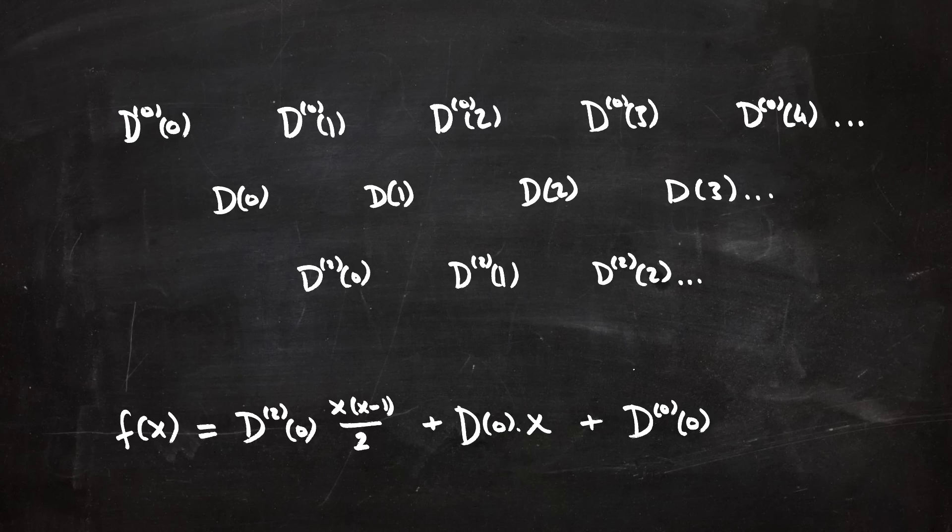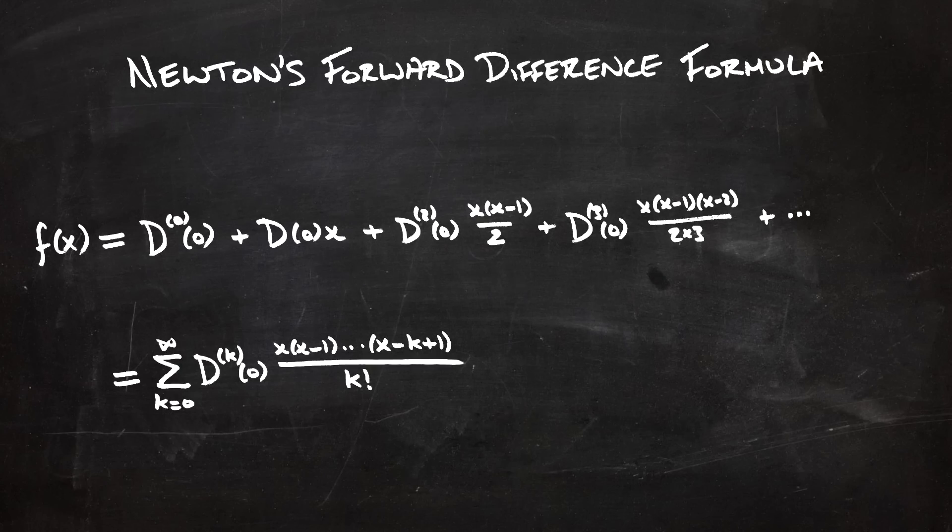In general, it looks like this. This is a sum of the differences evaluated at zero, divided by a factorial, and multiplied by x, then x times x minus one, then x, x minus one, x minus two, and so on. That's called a falling factorial. It's an infinite sum, but after the nth term the differences will be zero, so they disappear.